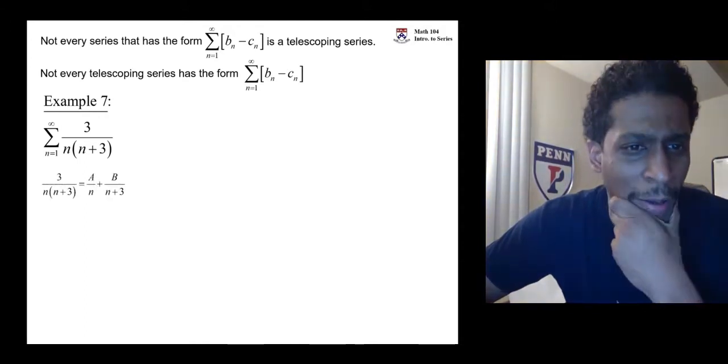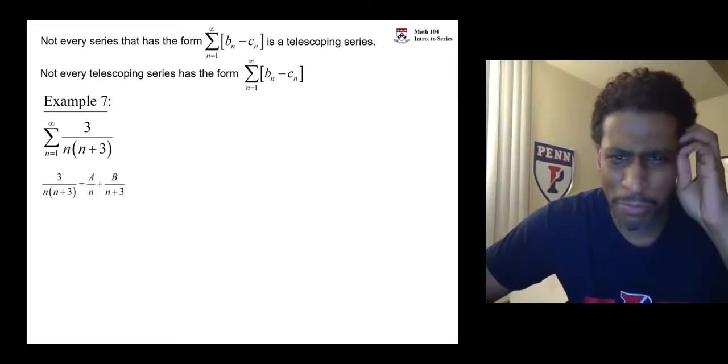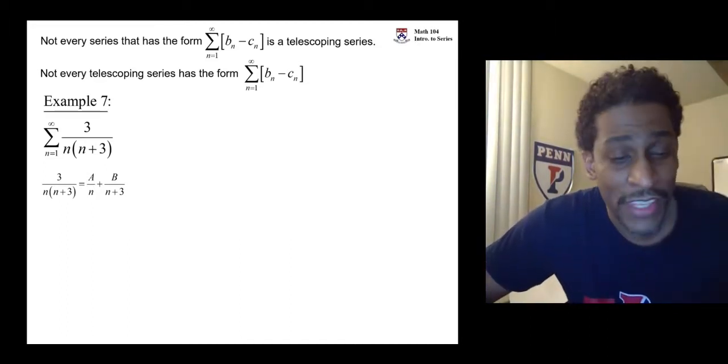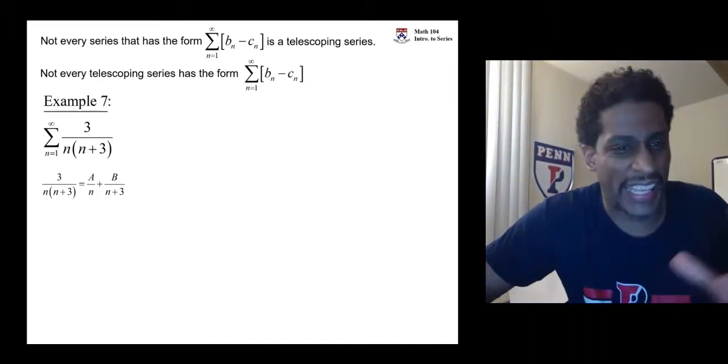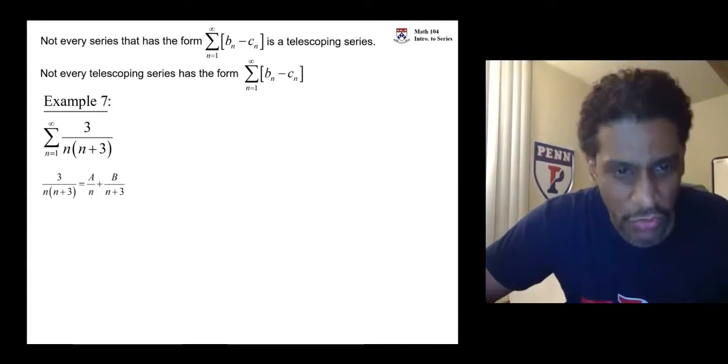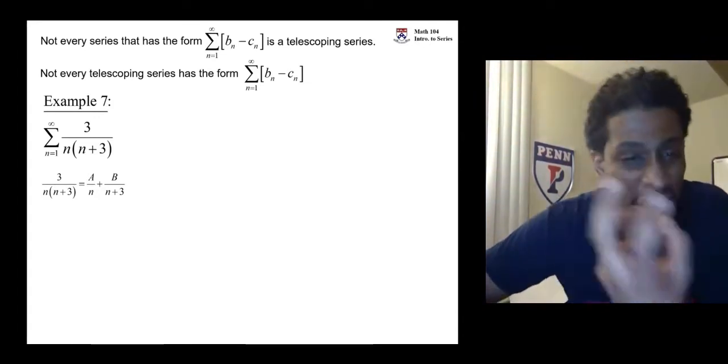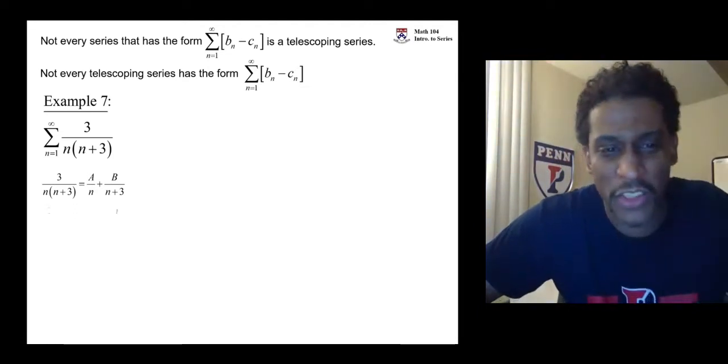It should be some a over n and some b over n plus 3. So you multiply by n plus 3 in the first fraction. You multiply by n in the second fraction. And you compare the numerators.